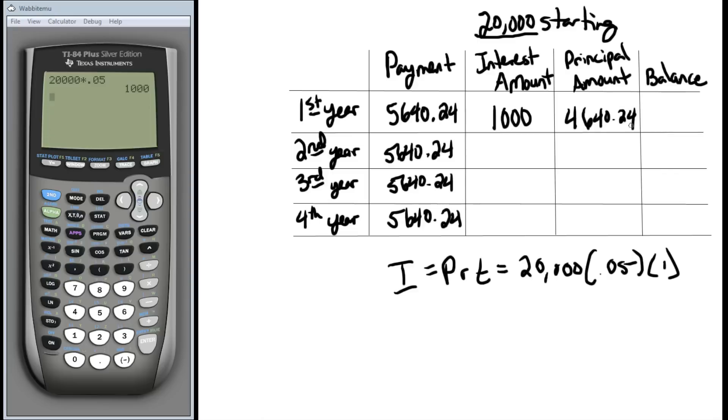Our first payment reduces our balance by this much. This is how much money of our payment is going towards our balance. So it was $20,000 originally, and we're going to apply $4,640.24 to it, leaving us with the remaining balance of $15,359.76. This is our balance at the end of the first year. This is how much needs to be paid off in the next three years. So we go to look at our next year.